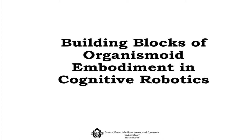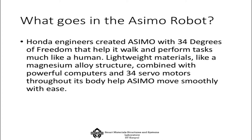Let us look into Honda's specifications and see how human-like the ASIMO robot really is. Honda engineers created ASIMO with 34 degrees of freedom. This essentially means there are 34 independent ways in which ASIMO can move its different limbs or body parts, and that helps it perform many tasks — not exactly like a human, but much like a human.